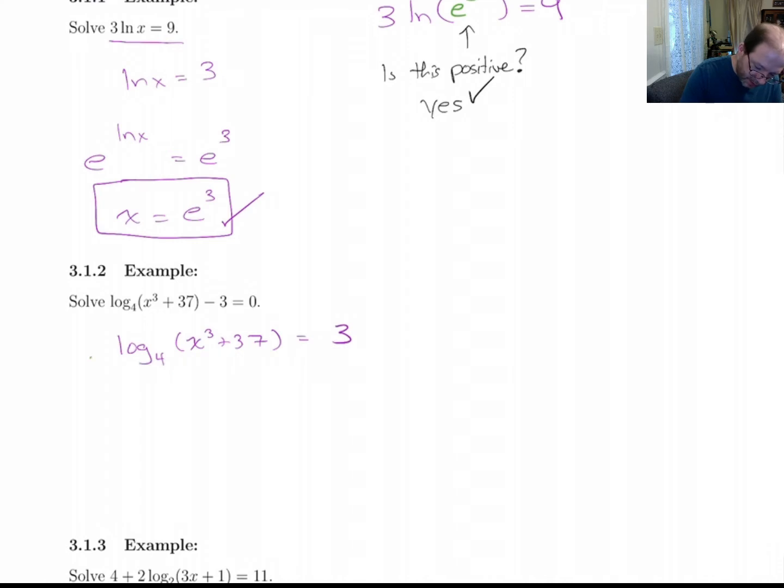Now it's perfectly fine with me if you want to just come in and do this. 4 raised to this equals 4 raised to that. So that gives me x cubed plus 37 equals 4 to the 3rd power. 4 to the 3rd power is 64. So I get x cubed equals 64 minus 37 is 27. So x cubed is 27, that gives me x is 3.